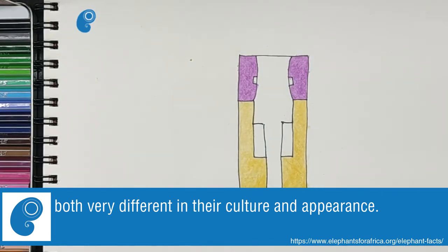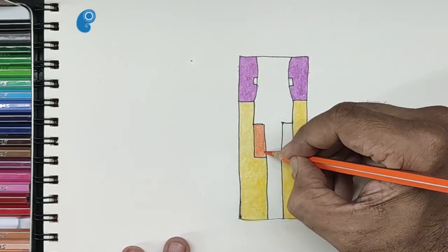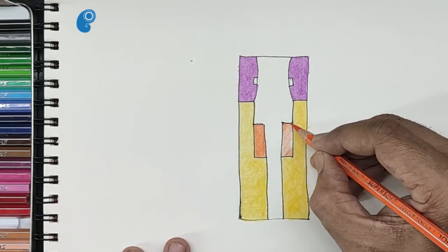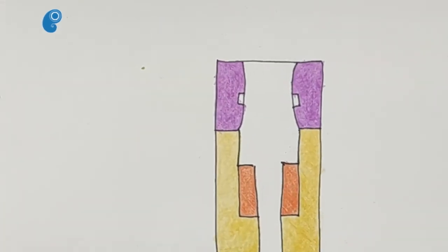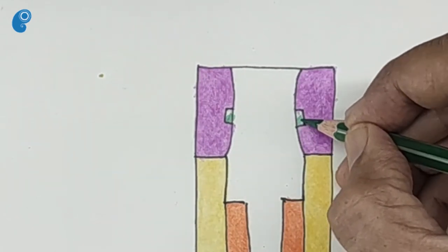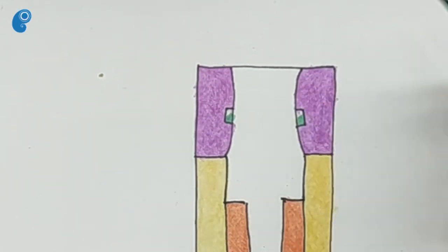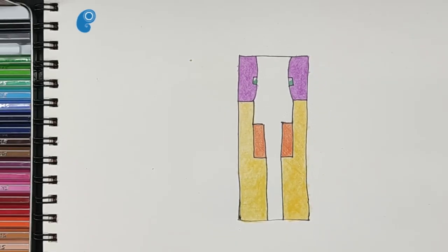Let us give orange to his tusks. We will color his eyes green. We will leave the face as it is. We have completed drawing and coloring blocky.